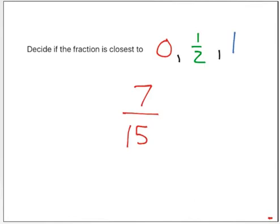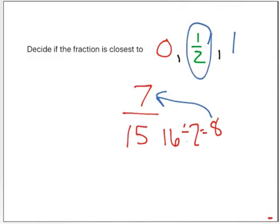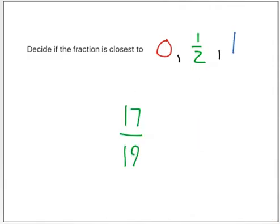What about the fraction 7 fifteenths? Is that closest to 0, a half, or 1? When I look at this fraction, I'm thinking 15 is almost 16, and 16 divided by 2 is 8. And the number 7 and the number 8 are really close to each other. And 8 would be halfway, so I think this fraction 7 fifteenths is closest to a half.